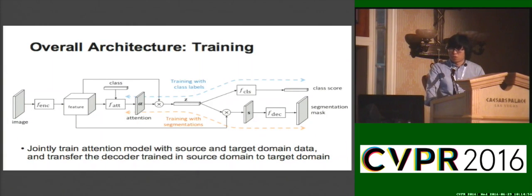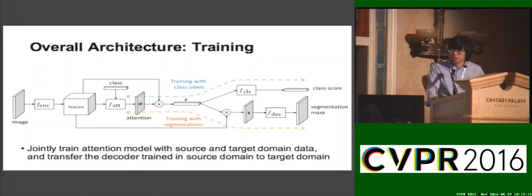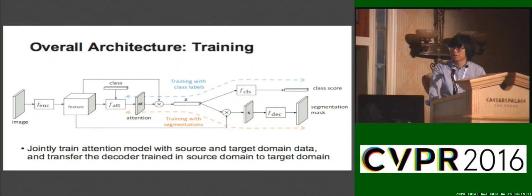During training, we leverage segmentation annotations from the source domain to learn the decoder and attention model, and image level class labels in both domains to train the attention model under the classification objective. To this end, we compute the context vector Z, which is the spatial abstraction of the feature map by attention weights. After training, we can naturally perform semantic segmentation on the target domain by exploiting the decoder trained with source domain data and the attention model adapted to the target domain category.